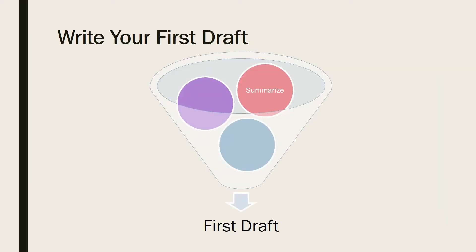So first, in writing our first draft, let's look over the information that you gathered for your topic. Make sure that you summarize, paraphrase, or quote directly — but don't forget that you need to notate that correctly so that you don't end up plagiarizing something. Make sure that you do use each idea you plan to use in your essay and that you organize your items according to your outline.